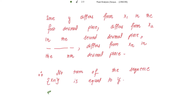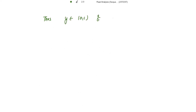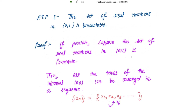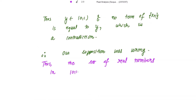Since y differs from x₁ in the first decimal place, from x₂ in the second decimal place, and from xₙ in the nth decimal place, no term of the sequence xₙ is equal to y. Since y lies between 0 and 1, y is a real number and y must belong to the open interval (0,1). But we proved that no term of the sequence xₙ equals y — this is the contradiction.